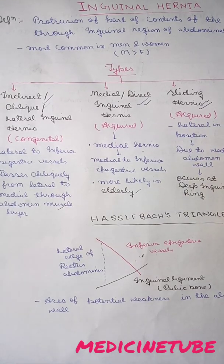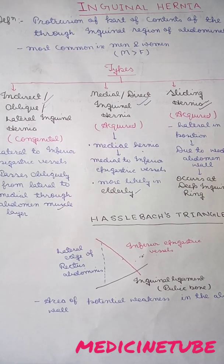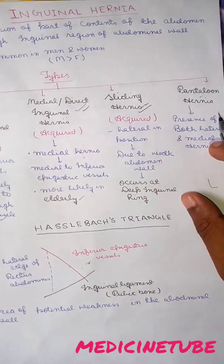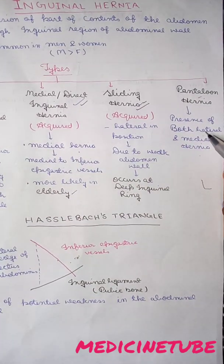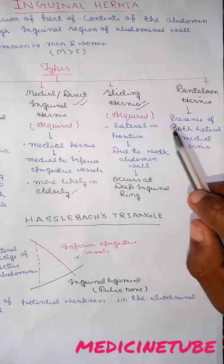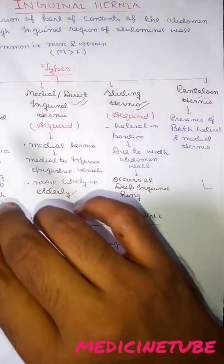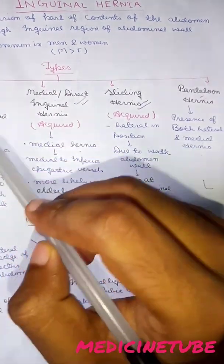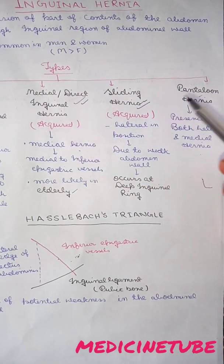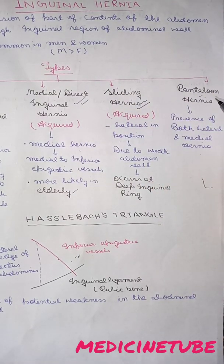Next, pantaloon hernia. Pantaloon hernia is a rare condition. It is the presence of both lateral and medial hernia together, so it is called pantaloon hernia. So there are four types: indirect or oblique lateral inguinal hernia, medial or direct inguinal hernia, sliding hernia, and pantaloon hernia.